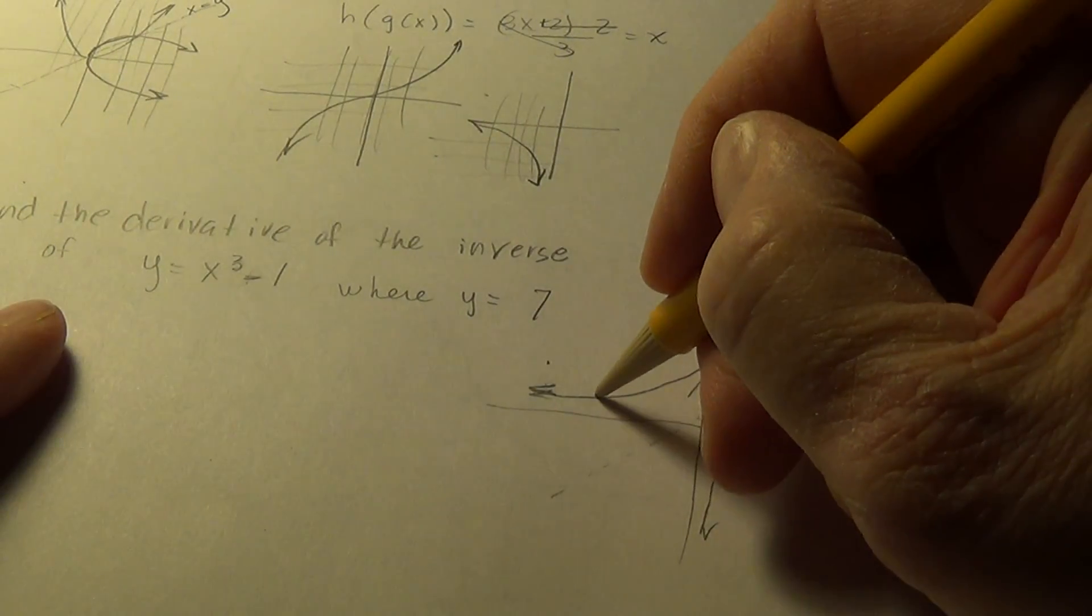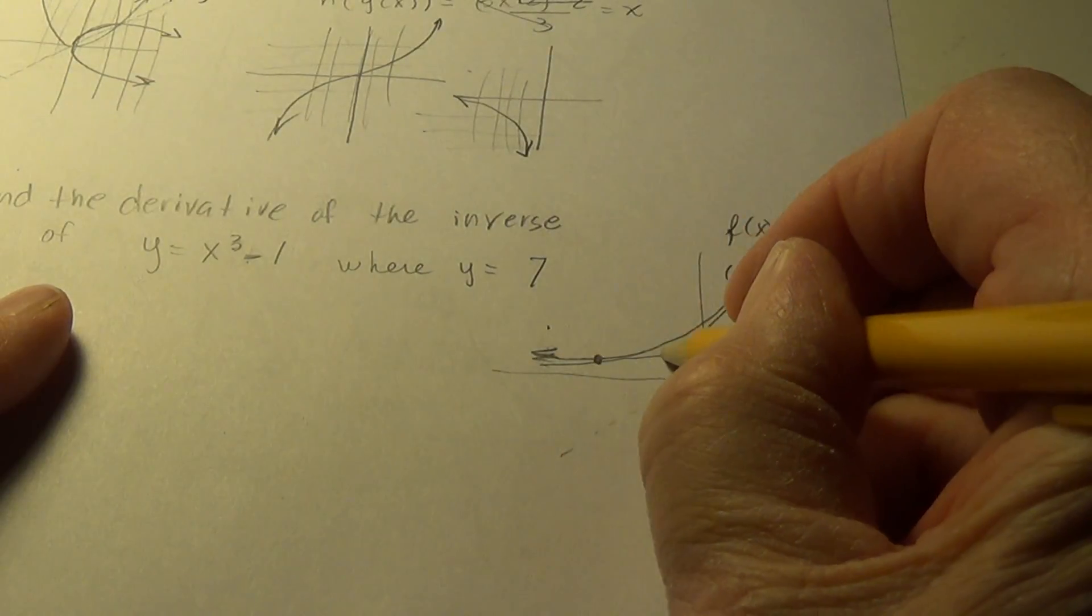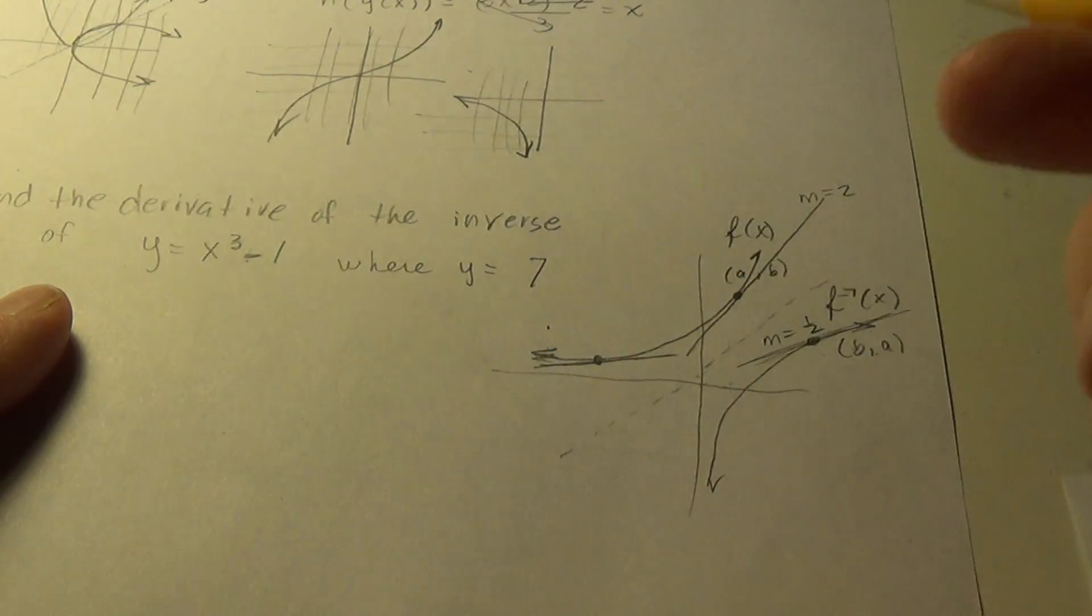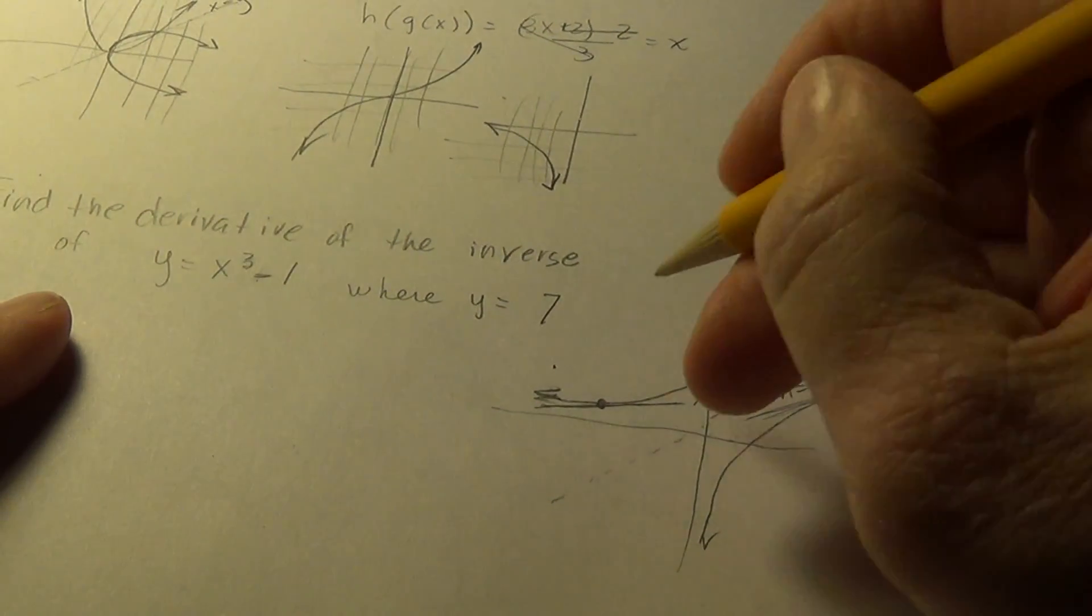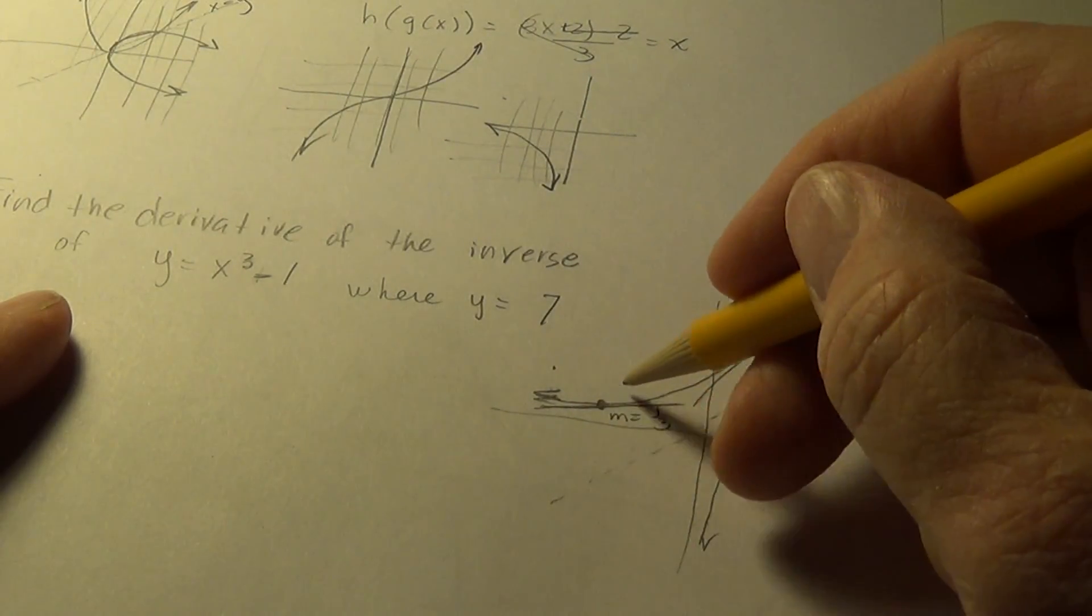So, let's look at this point here. Here, the slope is quite, quite flat. So, say m equals, I don't know, 1 third.